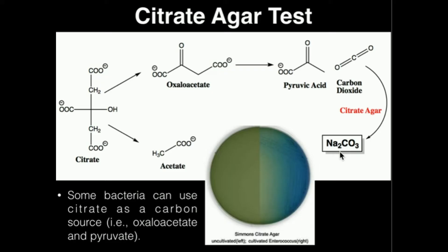What this citrate agar test is actually measuring, other than a bacteria's ability to use citrate as a carbon source, is it's actually measuring the pH. We have a pH indicator called bromothymol blue. When it turns alkaline, it turns blue. It's actually normally green at neutral pH.